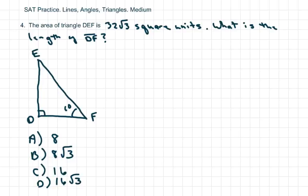Hi everyone, this is SAT practice lines, angles, triangles, medium. It's given the area of triangle DEF is 32√3 square units. They want to know the length of DEF, so they want to know the length of this. First of all, when you do these, try to pause the video and then that way you can get through quicker because a lot of these aren't that hard.